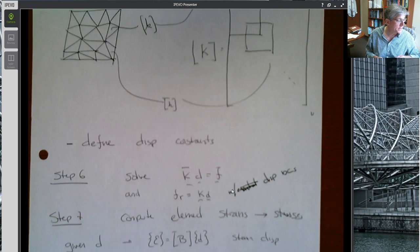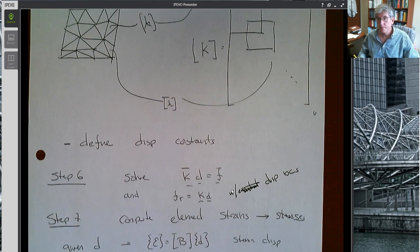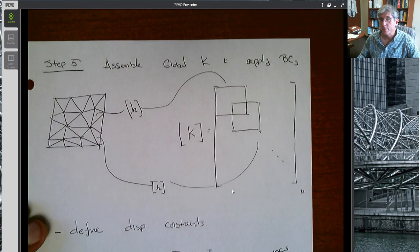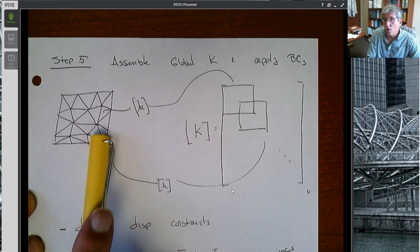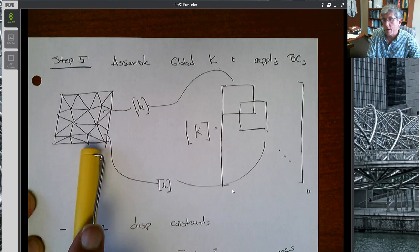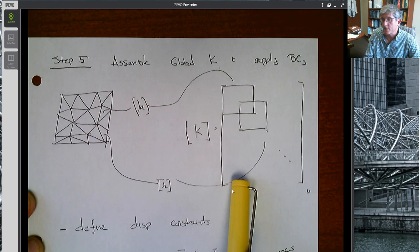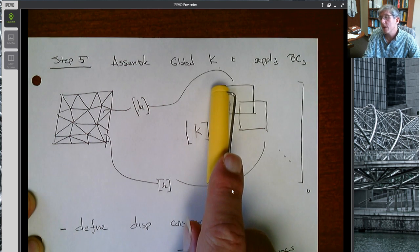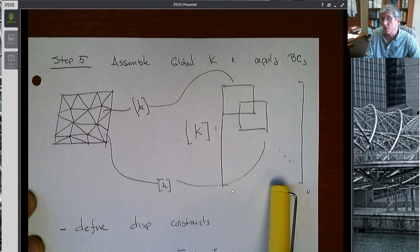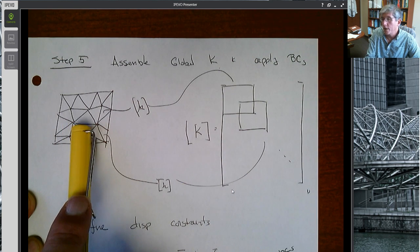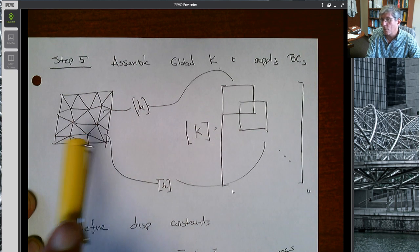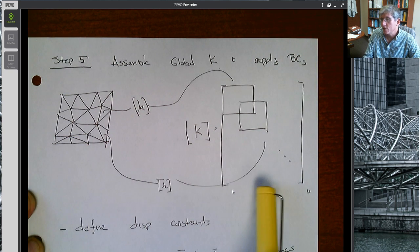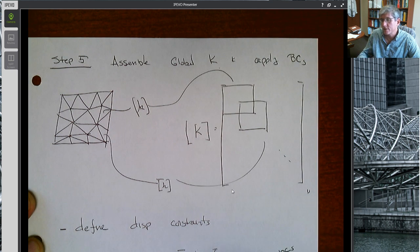The next step will be to form the global stiffness matrix by assembling the individual stiffness matrices from all the elements in your discretization or your mesh. That'll populate a global stiffness matrix which has the same dimensions as the number of degrees of freedom in your model. So if you have like 20 nodes and each node has two degrees of freedom, x and y, that's 40 total degrees of freedom, so this stiffness matrix will be a 40 by 40 matrix.